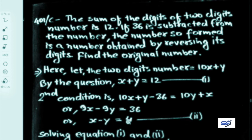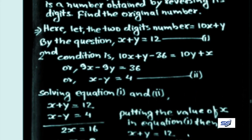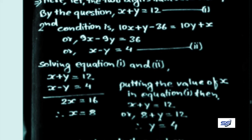From equation 1 and equation 2 we solve. Equation 1 is x plus y equals 12, and equation 2 is x minus y equals 4. Adding both equations: 2x equals 16, therefore x equals 8.